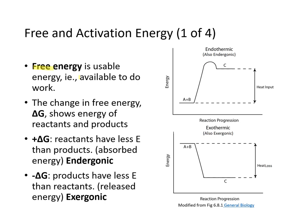Free energy is usable energy — the energy available to do work. The change in free energy is referred to as delta G, and it shows the energies of reactants and products. If delta G is positive, the reaction is called endergonic; if delta G is negative, it is called exergonic. In an endergonic reaction, the reactants have less energy than the products because energy had to be inputted into the system.